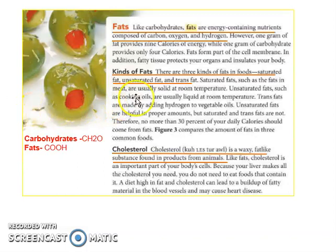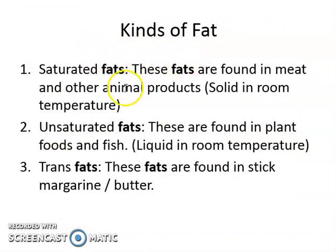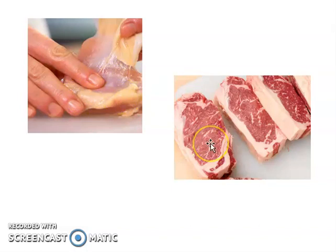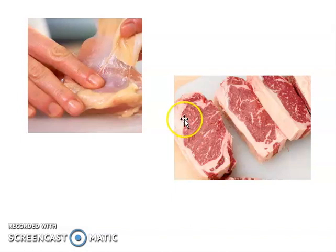Now, here are the kinds of fats — three kinds. Saturated fats are the fats that you can find in meat and other animals. Saturated fats are solid at room temperature. The example is the fat in chicken — this is the meat part, and this is the fat part. For beef, this red part is the meat, and this white part is the fat. It is solid at room temperature, but when you cook or boil it, this fat will melt.